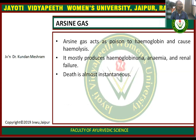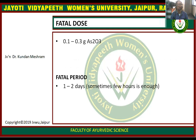Arsenic gas acts as a poison to hemoglobin and causes hemolysis. It mostly produces hemoglobinuria, anemia, and renal failure. Death is almost inevitable. The fatal dose is 0.1 to 0.3 grams of As2O3. The fatal period is 1 to 2 days; sometimes a few hours is enough.